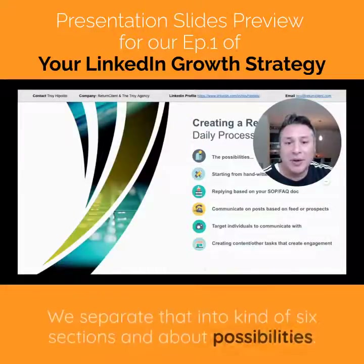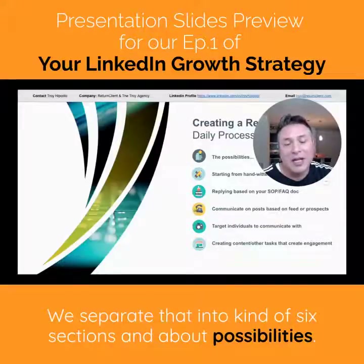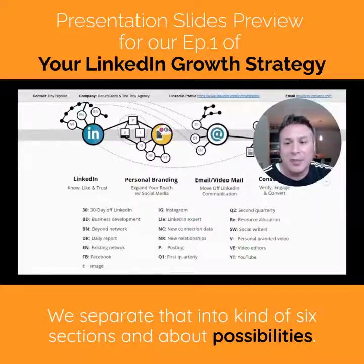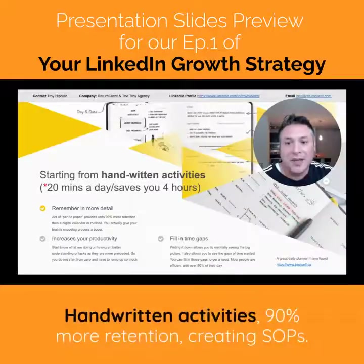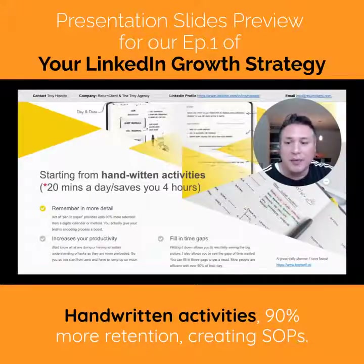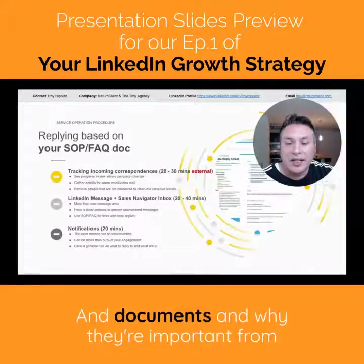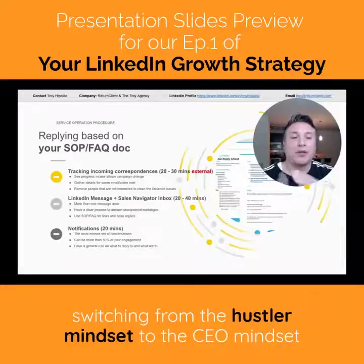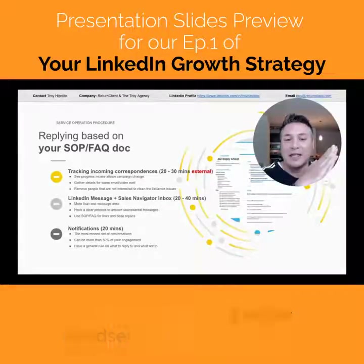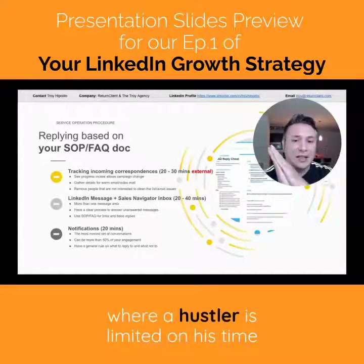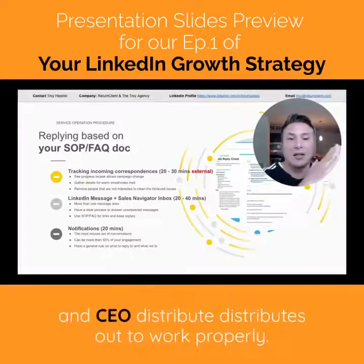First is creating a daily process. We separate that into about six sections: possibilities, handwritten activities — which have 90% more retention — and creating SOPs and documents, and why they're important. This covers switching from the hustler mindset to the CEO mindset, where a hustler is limited on his time and a CEO distributes the work properly.